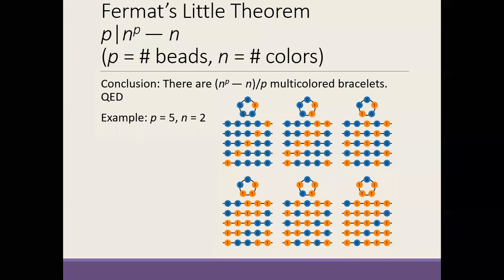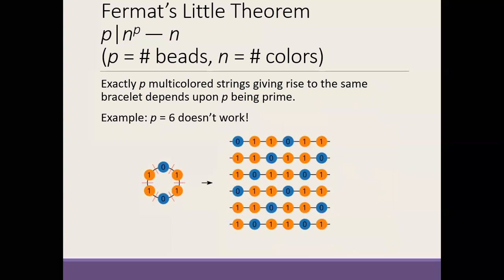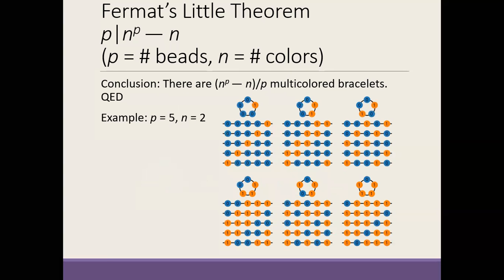Otherwise the string beads might wrap back to where they started too soon. For instance, for p equal to 6, you had a couple of groups of size 3 repeating themselves. That happened because 6 is not prime — it has factors 3 and 2. So it was important that p be prime. Then the beads fall into groups of size p — in this case p was 5. That means n to the p minus n is divisible by p.